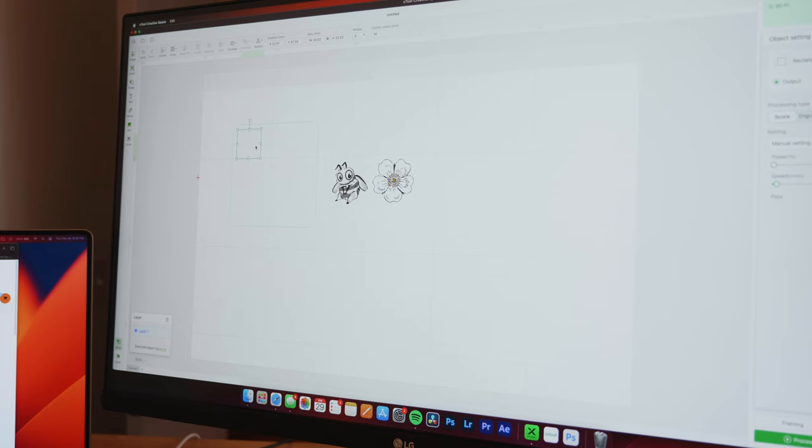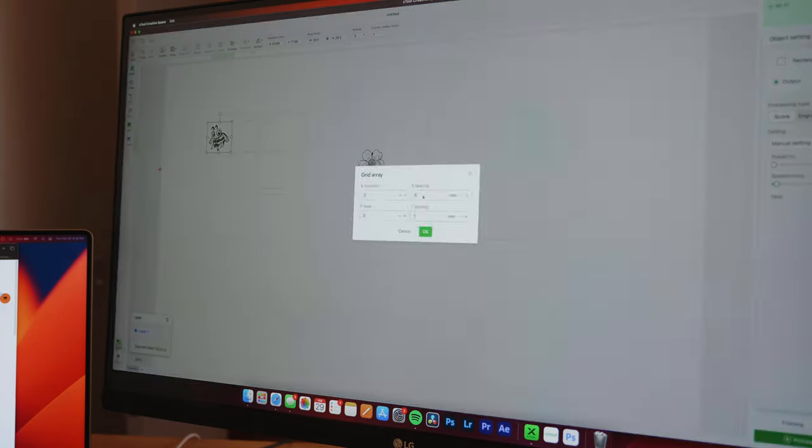Next up, I made a game. I was between making a chess, checkers, or tic-tac-toe game, but then I remembered I had this little bee that I drew, and I thought it would be a perfect design for tic-tac-toe. This project was a little more involved since it required gluing pieces together.